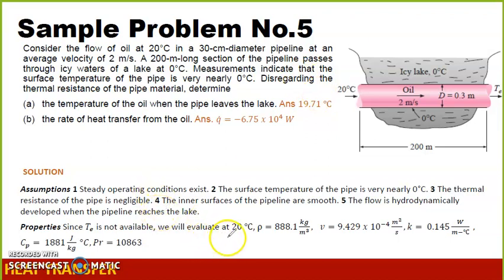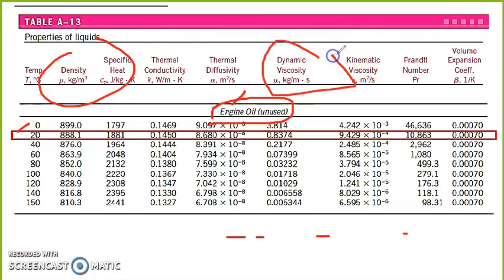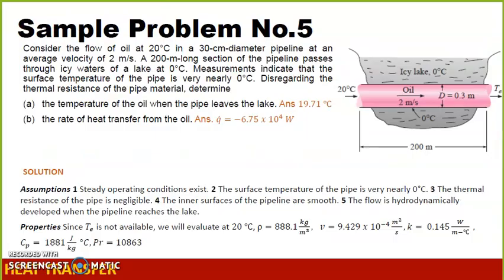At 20 degrees Celsius, we will find the density, the dynamic and kinematic viscosities, and we have the specific heat for oil at 20 degrees Celsius. For oil, we're referring to engine oil here. At 20 degrees Celsius, we can look for the density, the CP, the dynamic and kinematic viscosities, as well as the Prandtl number.